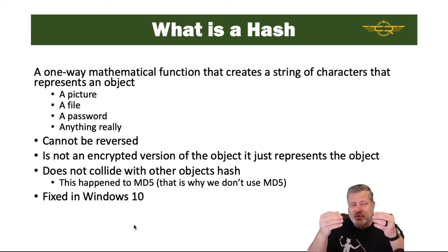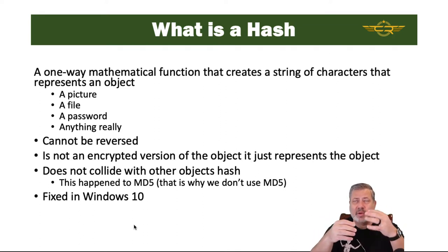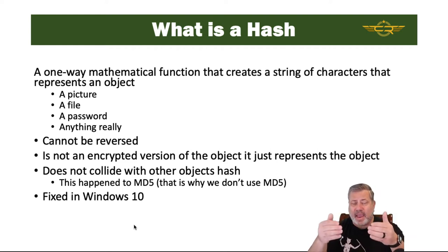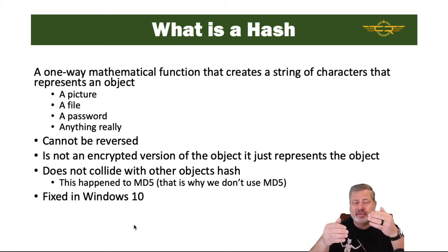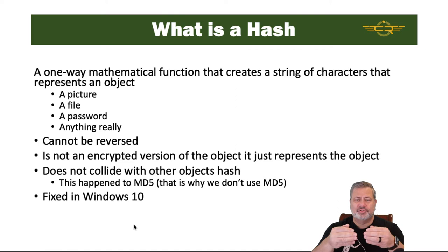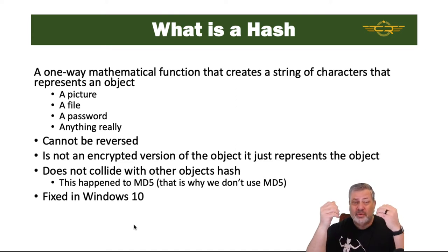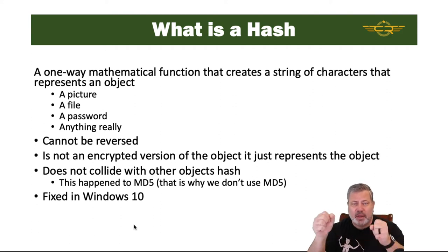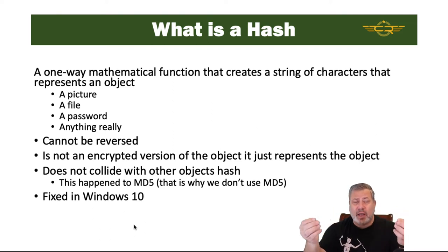The other thing we want to make sure is that hashes of two different objects shouldn't be the same. When we hash two different things, like two different passwords, it should never result in the same hash being created. That happened with MD5 — in some cases, hashing two different things would end up with the same hash value. That's called a collision. The hash value is really called the message digest, and when two message digests representing two different objects end up with the same hash, that's a bad thing.